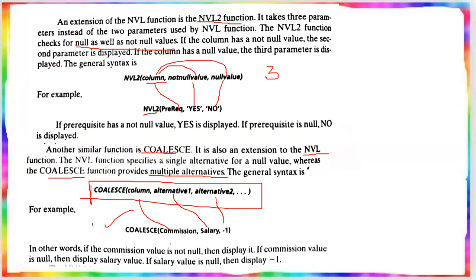If the commission value is not null, it is displayed. If commission is null, the salary value is displayed. If the salary value is also null, then -1 is displayed. So COALESCE gives you chained multiple alternatives for null replacement.